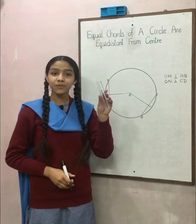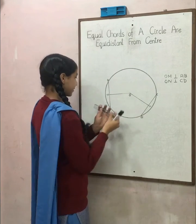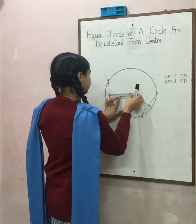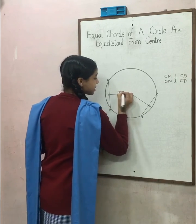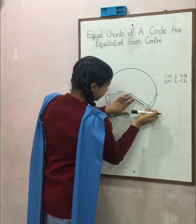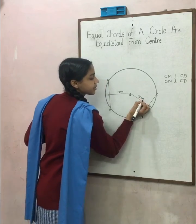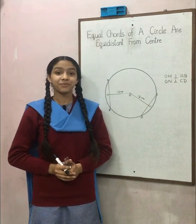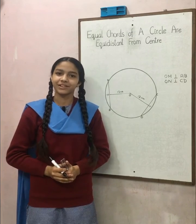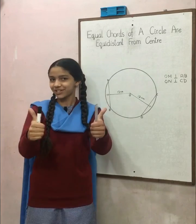Now, with the help of a ruler, measure O, M and O, N. This proves that equal chords of a circle are equidistant from the center. I hope you understand this topic. Thank you very much and have a good day.